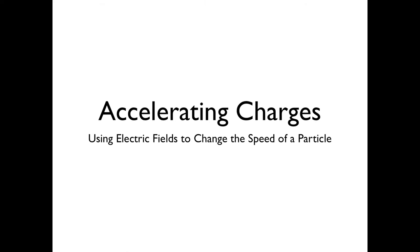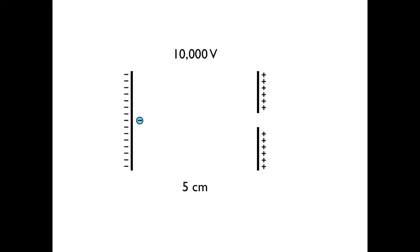Today I'd like to show you how we can accelerate charges using an electric field. Consider a charge placed between the plates of a charged capacitor, where there is an opening at one end. The negative charge plate will push the electron, the positive charge plate will pull the electron, and it will accelerate, building up a very large speed and eventually leaving the capacitor with some speed.